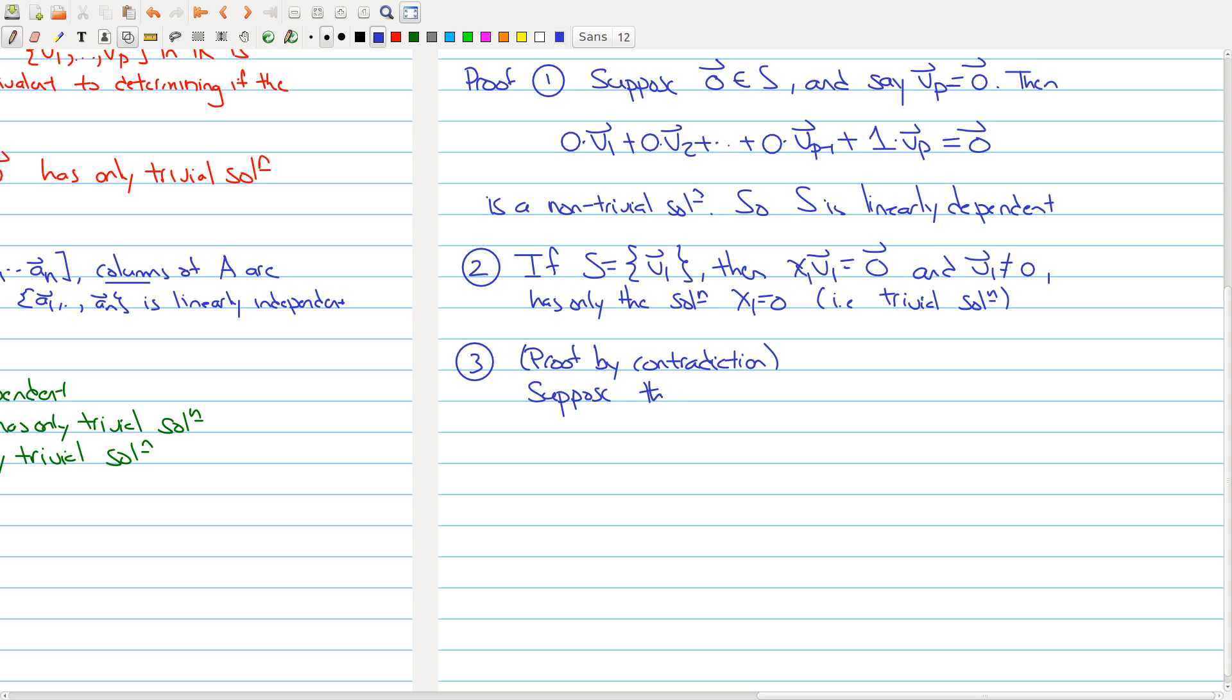Suppose there was a non-trivial solution A times V₁ plus B times V₂ equals to zero, where both A and B are not both zero. What we're doing is assuming that these two vectors are linearly dependent. Because we're assuming it's a non-trivial solution, one of the two numbers A or B has to be non-zero. So let's assume that it happens to be that A is non-zero.